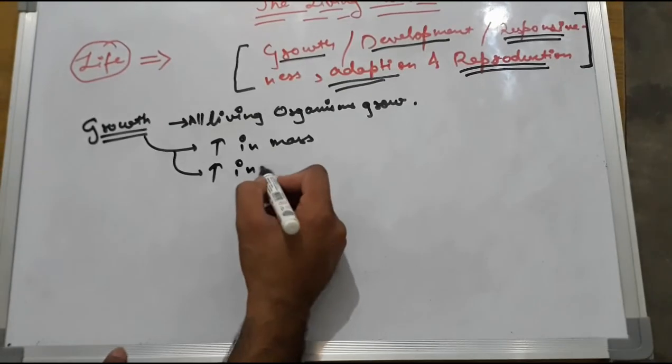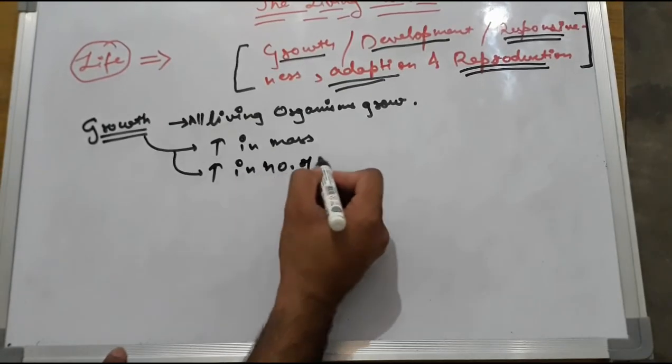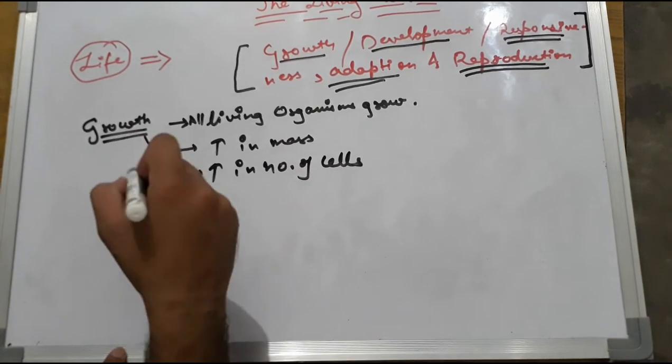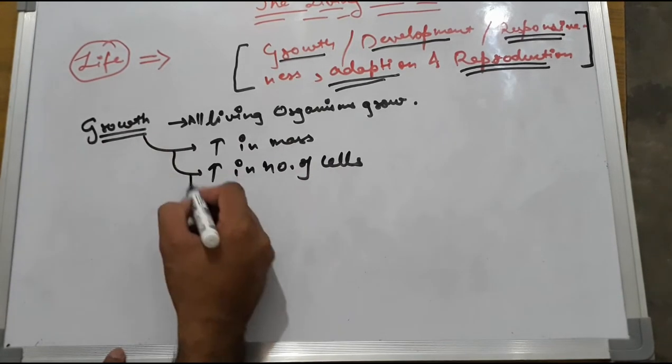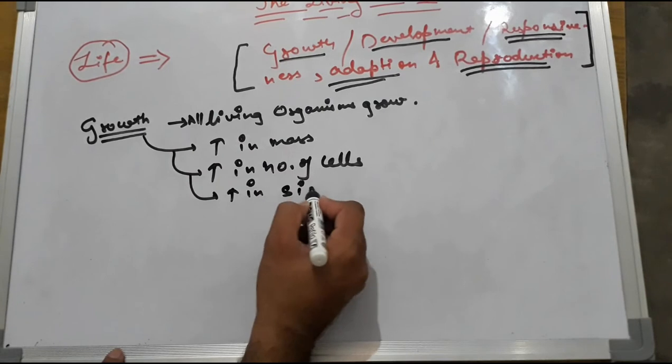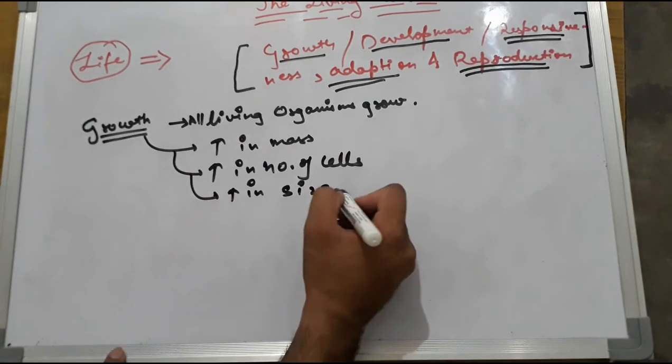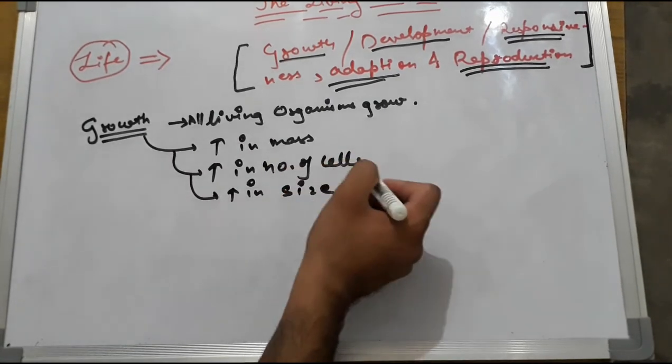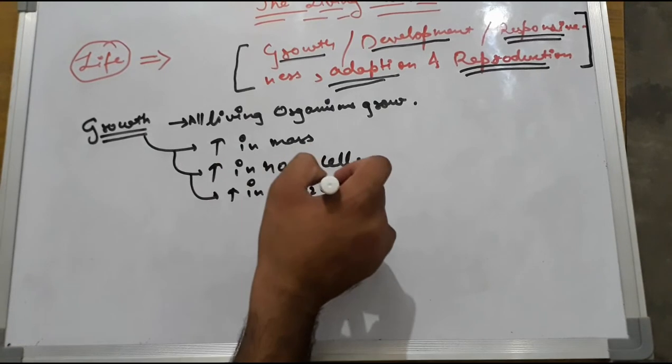Increase in number of cells, increase in size, increase in mass. This is how we can say growth.